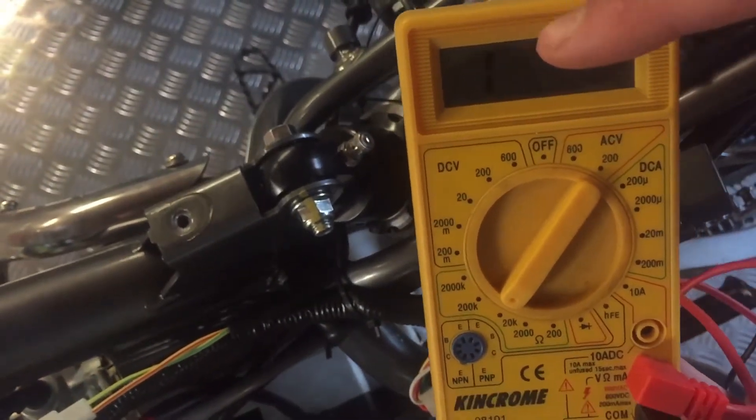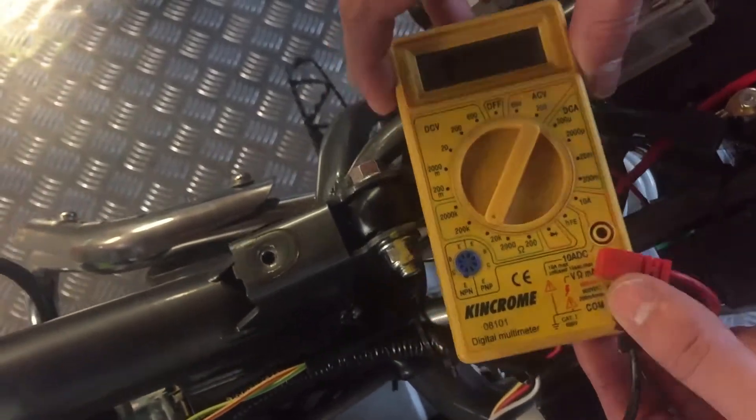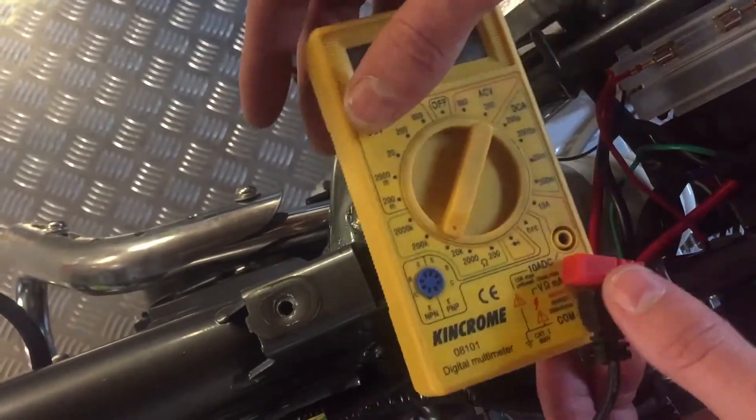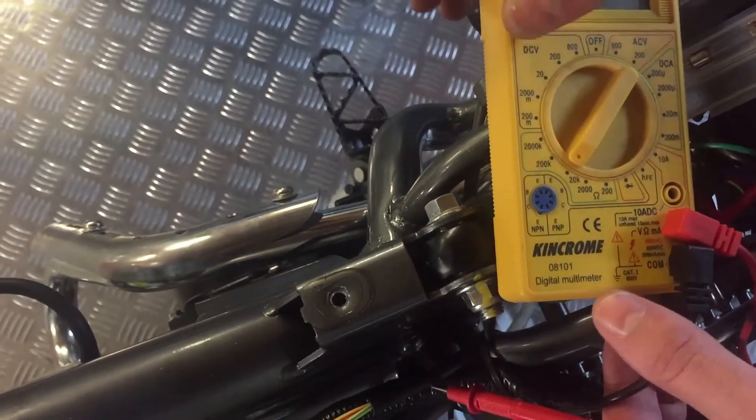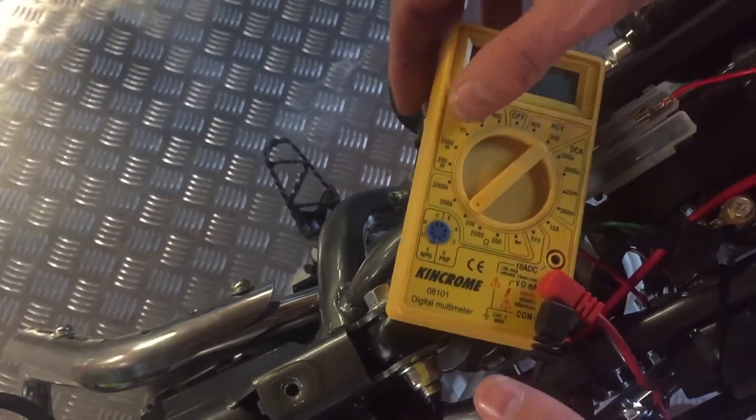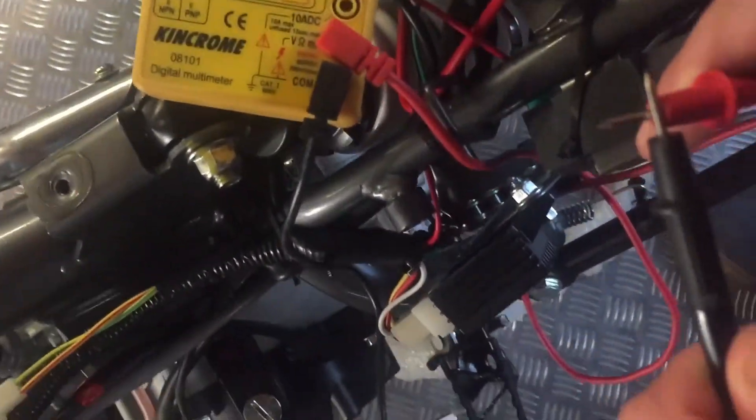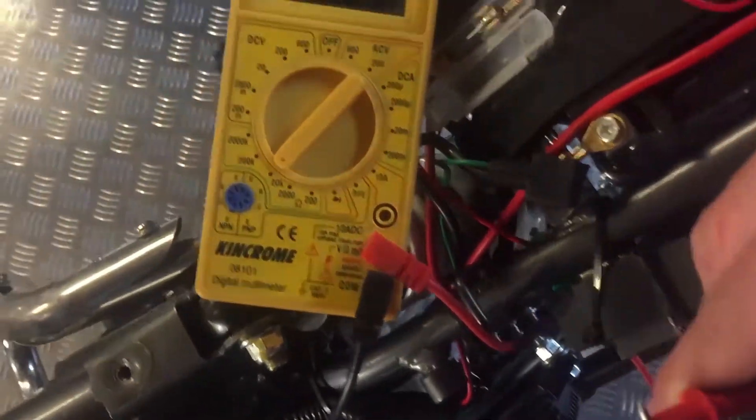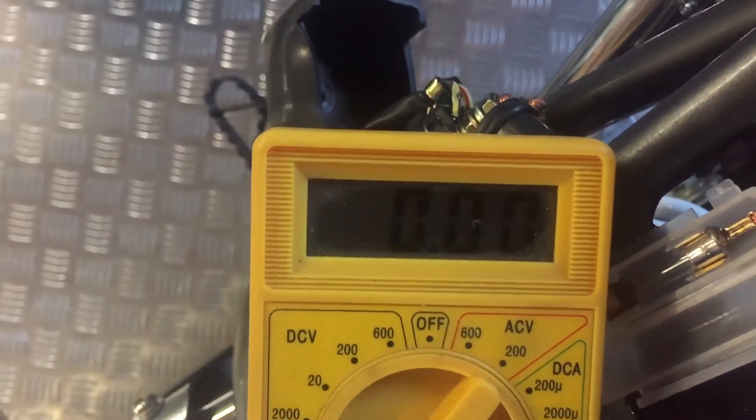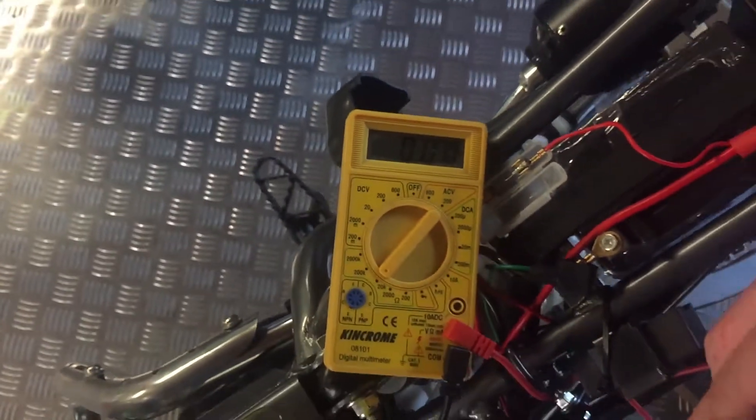You'll see a one show up like this at the moment, that means it's got an open circuit. Then if we put our leads together it should zero out. So now if you look at our voltmeter it's gone down to zero. Now we're going to do the same test but on the motorbike.